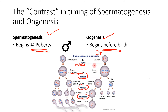In oogenesis, oogonium divides into primary oocytes before birth — a very big contrast. The primary oocyte then enters the first meiotic arrest and remains there until ovulation. At ovulation, the arrest is released and a first polar body is formed with clear asymmetry — most cytoplasm goes into the secondary oocyte, very little into the polar body. The secondary oocyte is then ovulated.